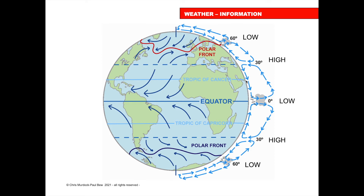And in the last video, we talked about the weather with air coming up giving low pressure, air falling down giving high pressure. So depending on where these cells are relative to where we are determines the weather we're going to get.